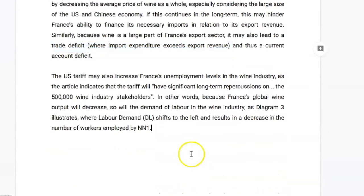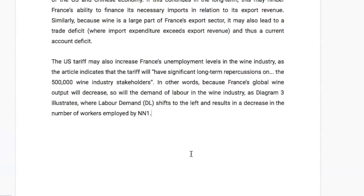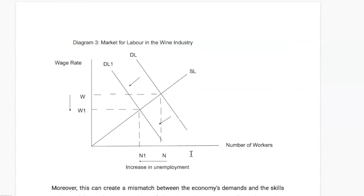We should also mention unemployment levels. The US tariff may increase France's unemployment in the wine industry — the article states the tariff will have significant long-term repercussions on the 500,000 wine industry stakeholders. Because demand for France's wine output will fall, firms will need to produce less, so they demand less labor. I like to use a market-for-labor diagram when discussing unemployment, pairing it with the AD-AS diagram. In diagram 3 we have wage rate on the y-axis and number of workers on the x-axis, showing how the fall in labor demand in the wine industry results in unemployment rising from N to N1.